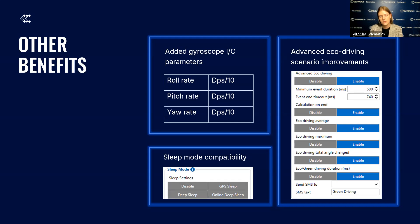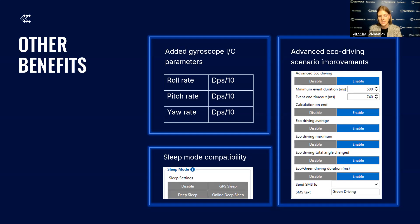We also added improvements to the eco/green driving scenario, including total angle change — additional data that shows how vehicle angles and degrees changed during a green driving event. Additionally, crash detection and full crash trace are always available, as the accelerometer and gyroscope are not turned off when the device is at sleep. That ensures continuous monitoring for crash events even when the device is in sleep mode, except ultra-deep sleep modes.